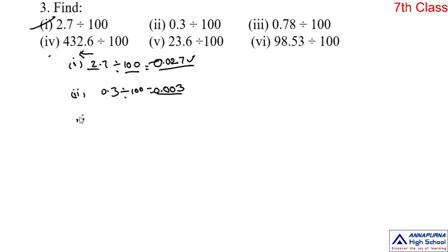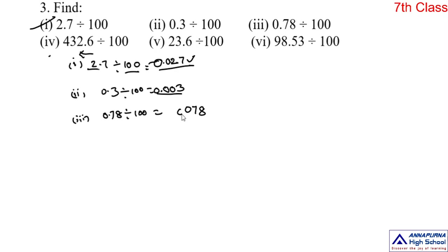Next, divide 0.78 by 100. Same procedure. Ignore the decimal point and write the number: 0, 7, 8. Over one, two zeros are there. Shift the decimal point towards left by two digits: 1 — there is no other digit, so put zeros. Counting 1, 2, put point. The answer is 0.0078.